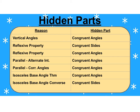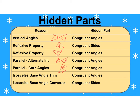Let's recap. Vertical angles hide congruent angles. The reflexive property can hide congruent sides — the shared side running down the middle — or congruent angles, like a shared angle. Parallel lines with alternate interior angles give us the bow tie picture. Parallel lines with corresponding angles are like two triangles stacked on each other. The isosceles base angle theorem: given the congruent legs, the base angles are congruent. And the converse: given the congruent angles, the legs are congruent — so that hides the sides.